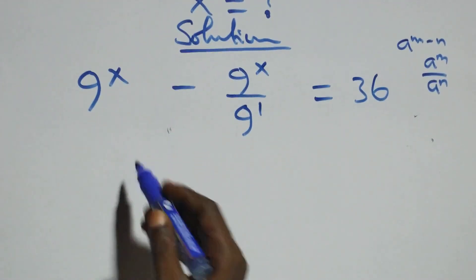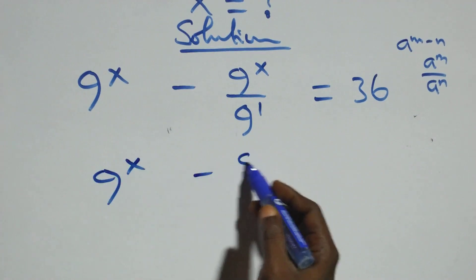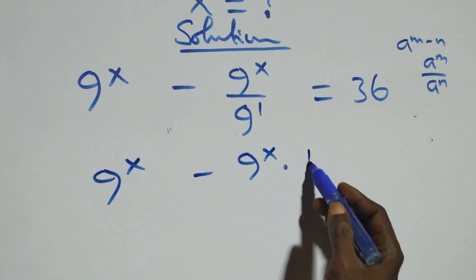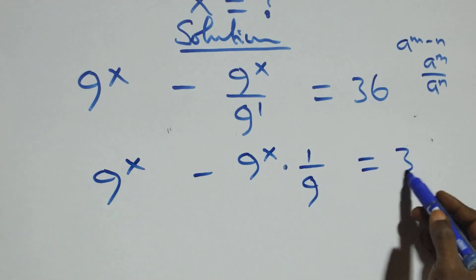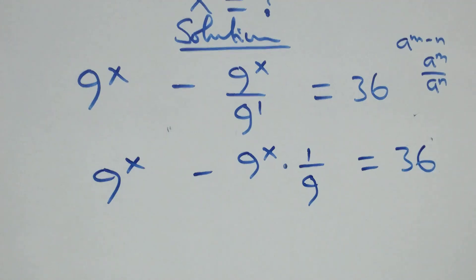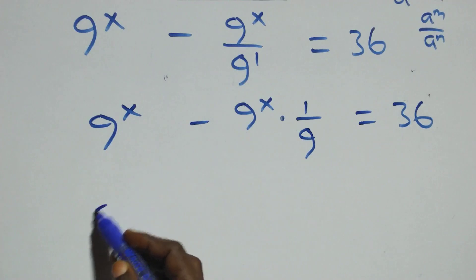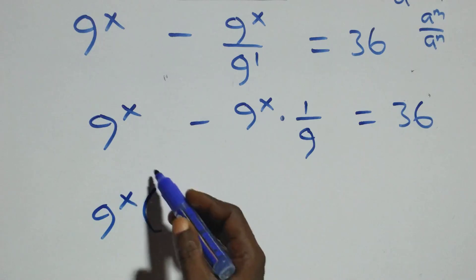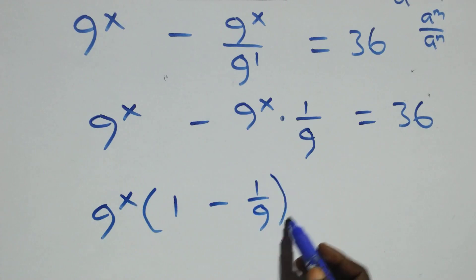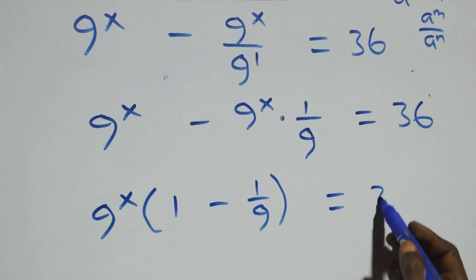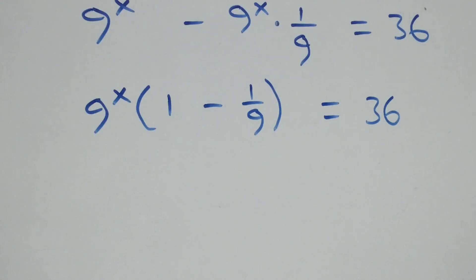This becomes 9 raised to power x minus 9 raised to power x times 1 over 9, which equals 36 on this side. Then we factor out 9 raised to power x as a common factor, giving 9 raised to power x into bracket 1 minus 1 over 9, equals 36 on this side.